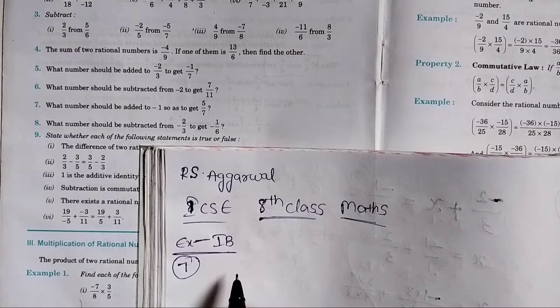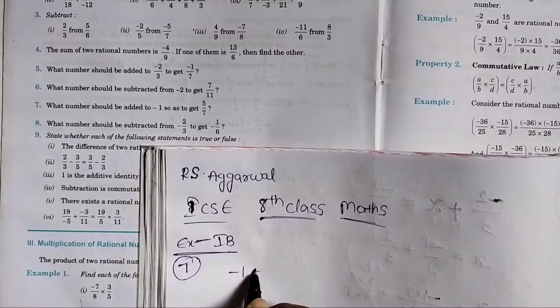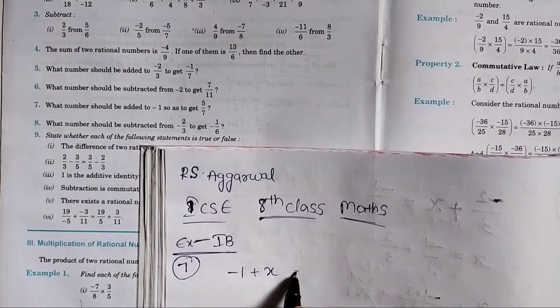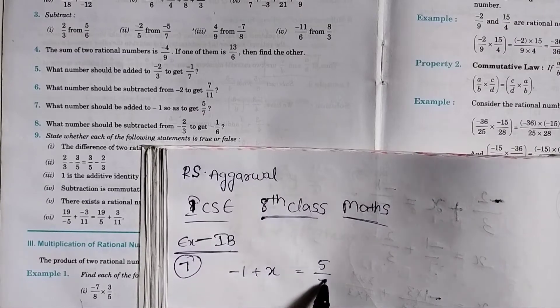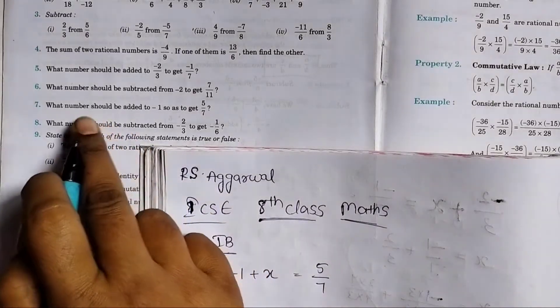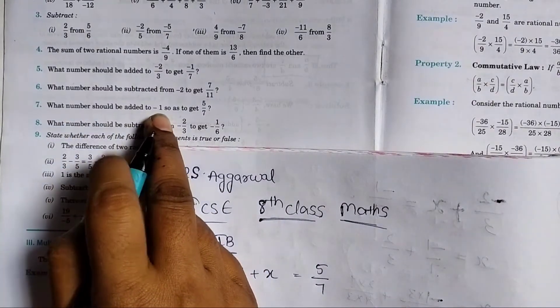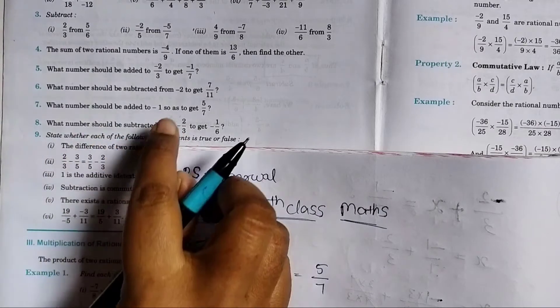What number should be added to minus 1? We need to add a number to replace this value. What number should be added to minus 1 to get the result?